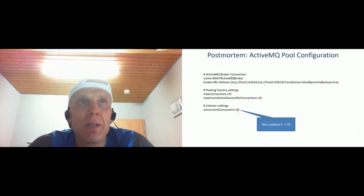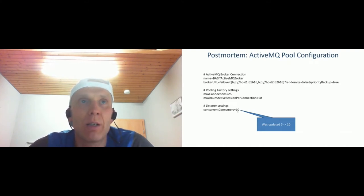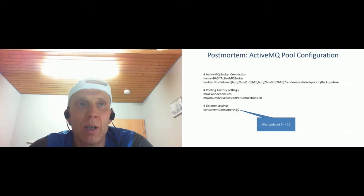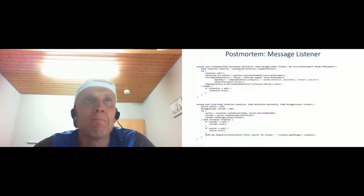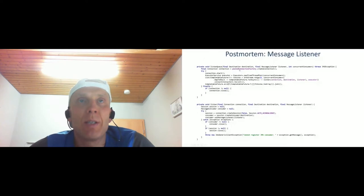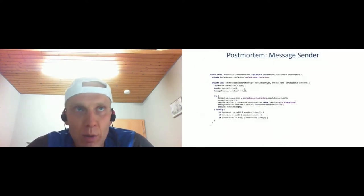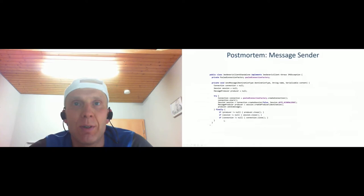Looking at how the code was implemented as a message listener: it creates a thread for each concurrent consumer, and every thread gets a session from the connection. Then the session creates a consumer from the destination and activates it — that's the message listener. After that, the consumer and session are closed. Interestingly, the connection was obtained from the pooled connection factory. On the message sender side, it used the same connection factory: create a connection, start the connection, create a session, create a producer, send the message, and close everything. Do you have any ideas what happened? Why was there this kind of problem?